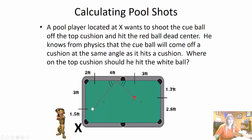Okay, and now the next application is calculating pool shots. So let's all meet down at Fast Eddie's. A pool player located at X wants to shoot the cue ball off the top cushion up here and hit the red ball dead center, okay, right here. He knows from physics that the cue ball will come off the cushion at the same angle as it hit the cushion. Where on the top cushion should he hit the white ball?